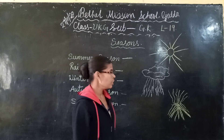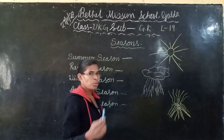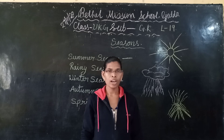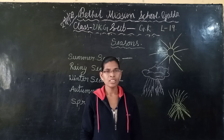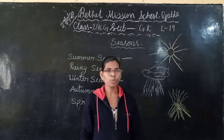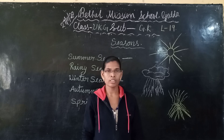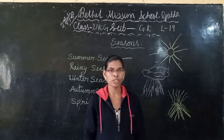Let's start with summer season. You all have felt how it is in summer season — it's too hot. In summer season the sun gives very bright light and too much heat to the earth, and that's why we feel very hot.